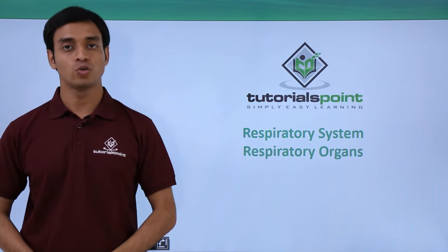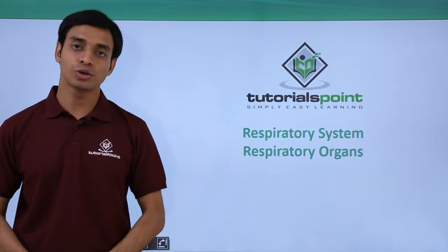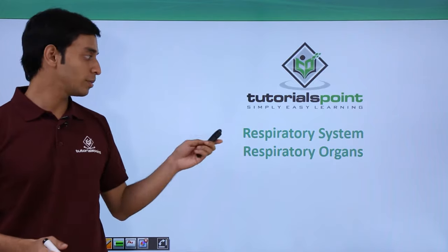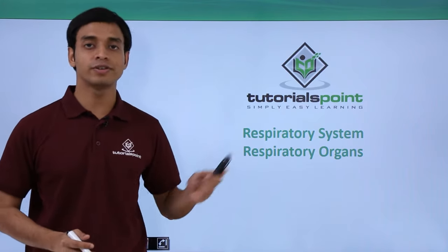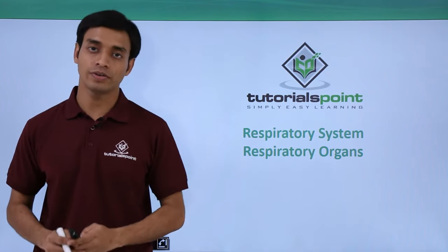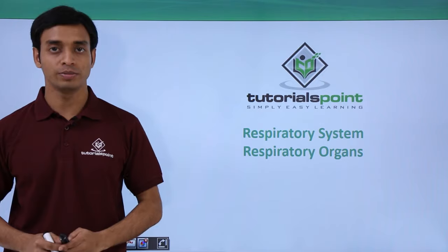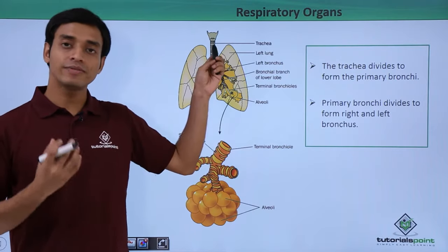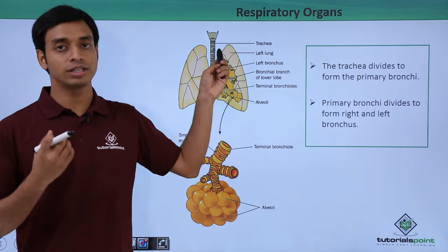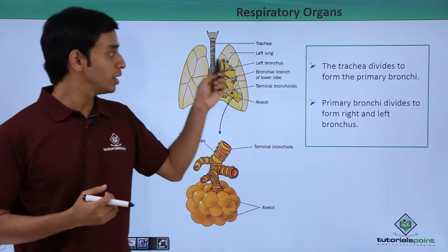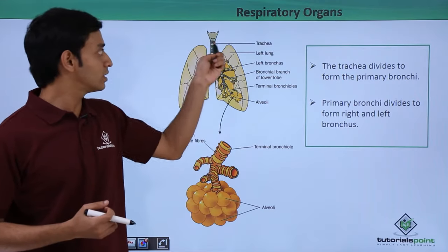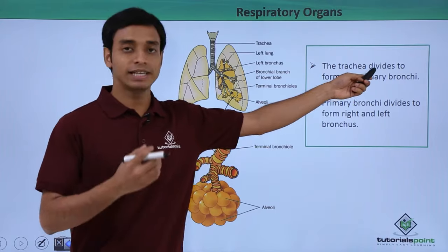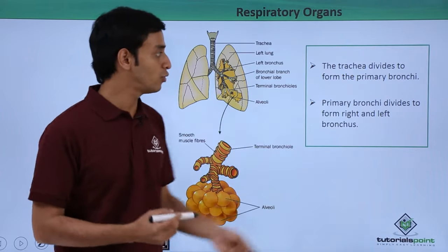Hello everyone, welcome to Tutorials Point. In this video we are going to talk about the various respiratory organs of the respiratory system of human beings. The first organ we discuss is the trachea, that is the windpipe. As you can see in this picture, the trachea divides to form the first part known as the primary bronchi.